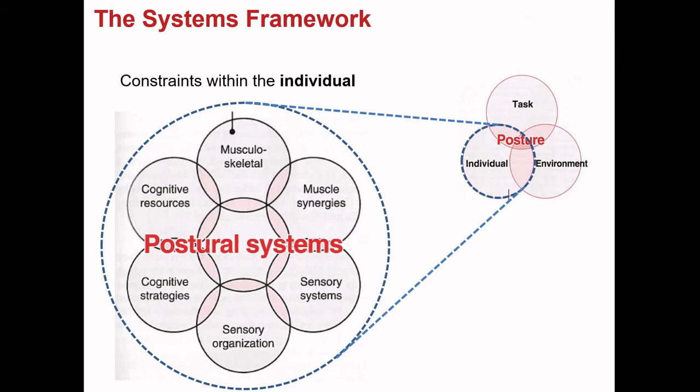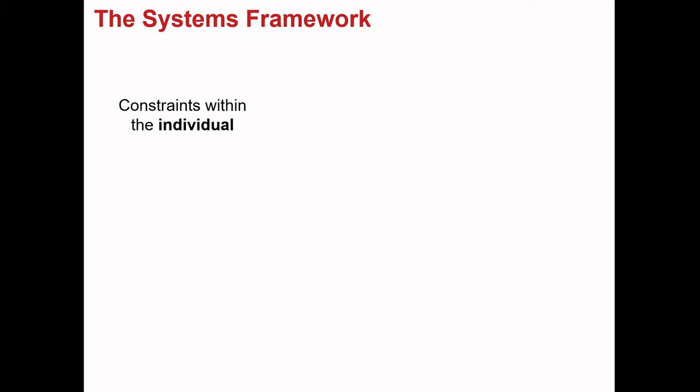We can take a more fine-grained look at the subsystems within the individual that are relevant to postural control. In the first part of our lectures on posture, we'll be looking at the motor constraints on balance control — specifically musculoskeletal constraints and muscle synergies. We will then look at sensory systems and sensory organization, and finally cognition. Synergies is a technical term related to how the actions of muscles are coordinated, and we'll be spending some time trying to understand this concept.